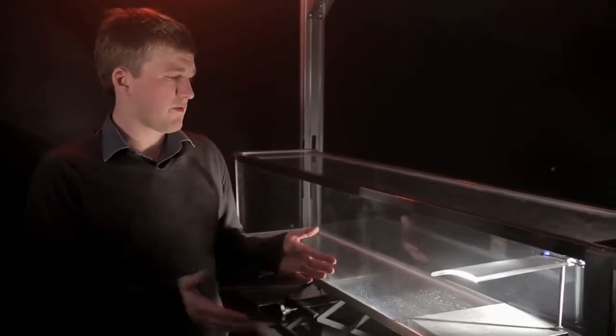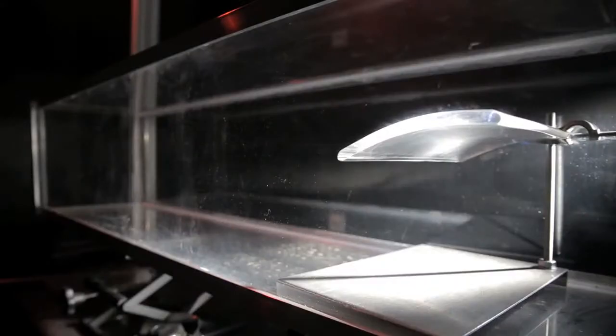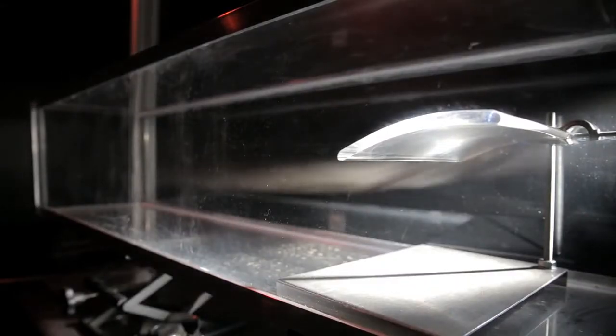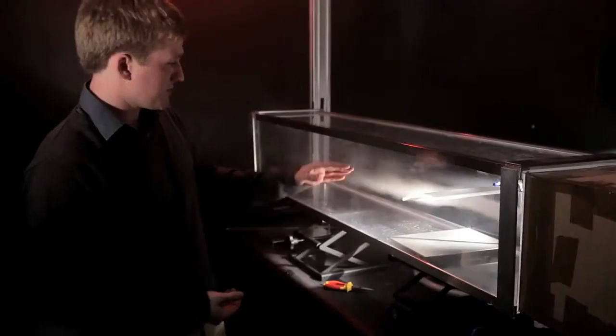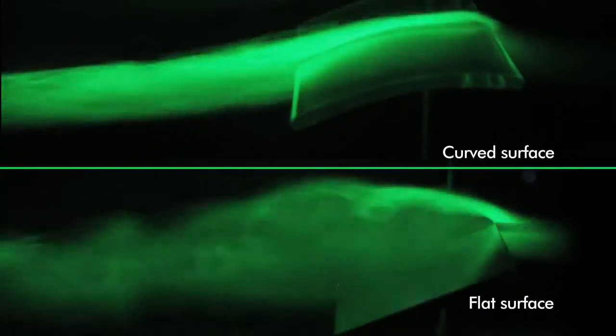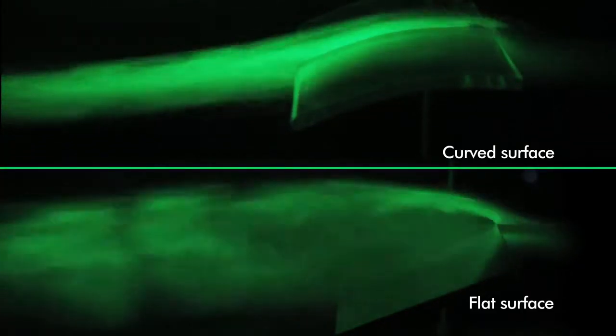So here we've got an example of a nice curved surface. What you can see here is the flow is smooth on the way in. It goes gently round the curve and it's much smoother on the way out compared to the flat plate. There's much less turbulence created here. It's a nice smooth flow before and after the turn.